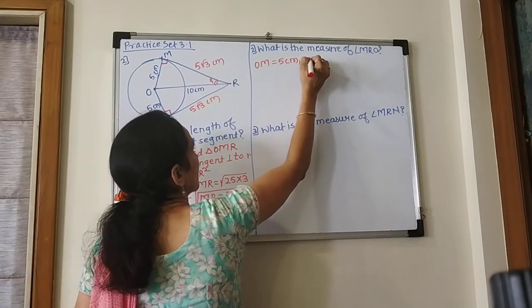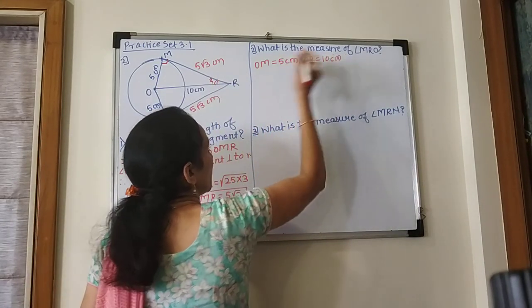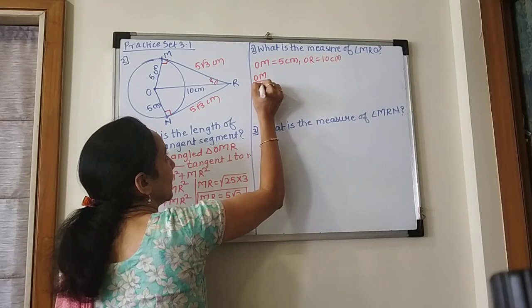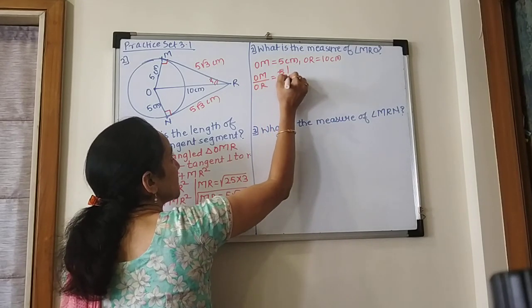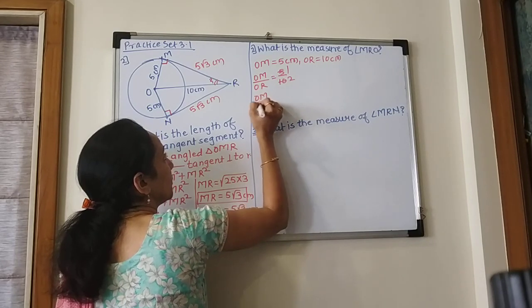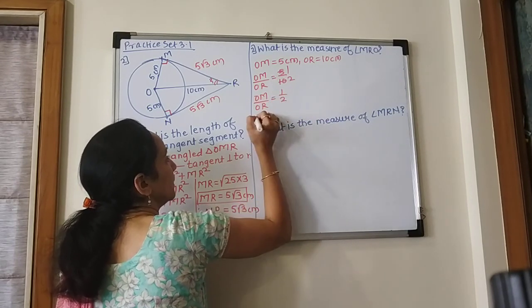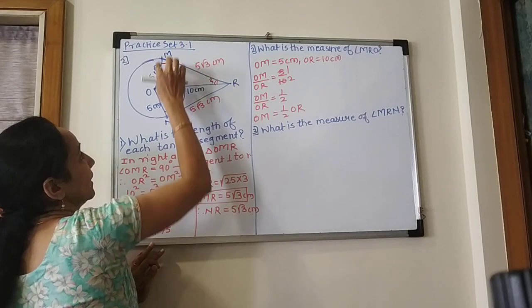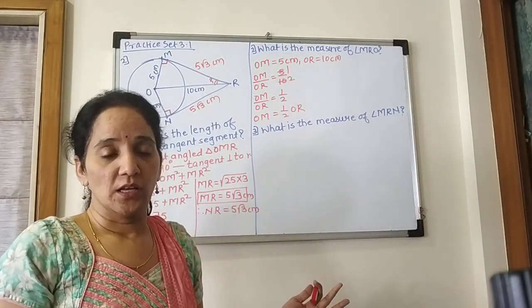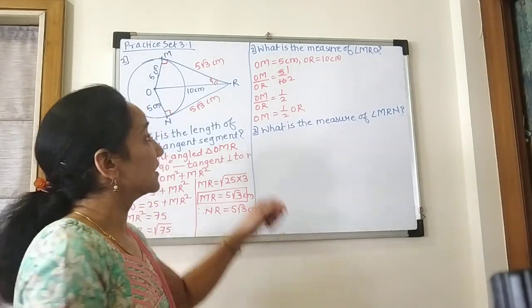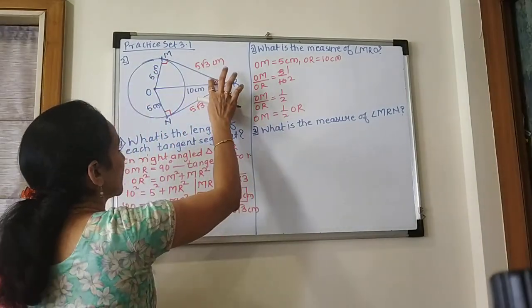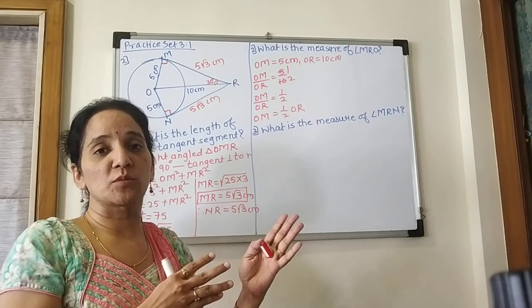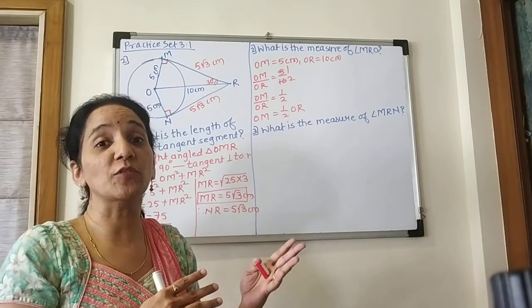OM upon OR is equal to 5 upon 10, which is equal to half. So OM is equal to half OR. OM is half the hypotenuse. What happens if we have this? In a right angle triangle, and we have to remember from the second chapter: the side opposite to 30 degrees is half of the hypotenuse.